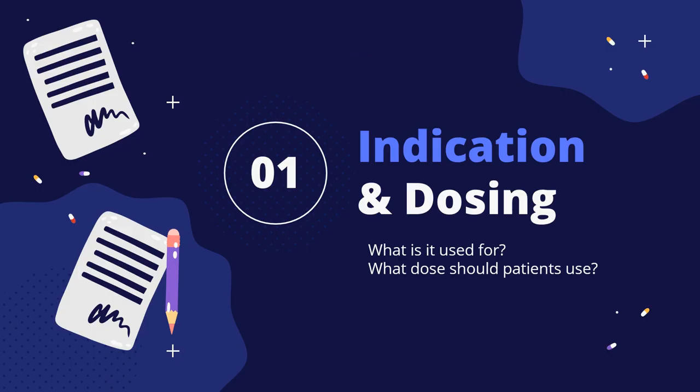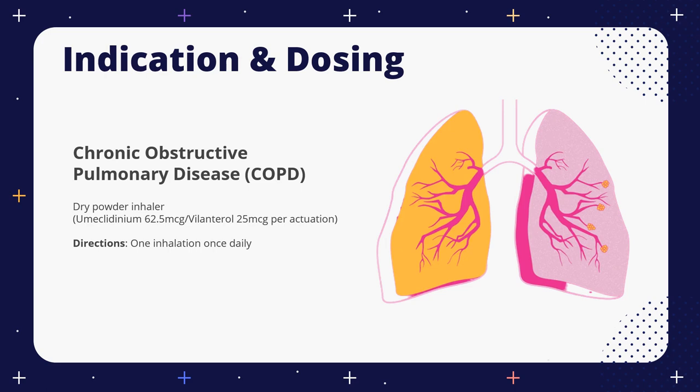Indication and dosing: What is it used for and what dose should patients use? Anoro Ellipta is only used for one indication — chronic obstructive pulmonary disease, or COPD. It comes in a dry powder inhaler that is a combination drug of umeclidinium 62.5 mcg and vilanterol 25 mcg per actuation. The dosage and directions are to take one inhalation daily. Anoro Ellipta is a dual bronchodilator that acts both as a long-acting muscarinic antagonist (LAMA) and a long-acting beta-2-adrenergic agonist (LABA), and may be taken with an inhaled corticosteroid for COPD depending on patient symptoms and exacerbation risk.